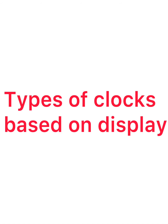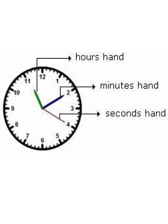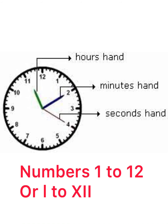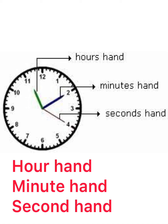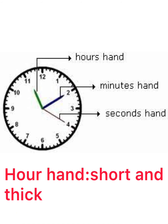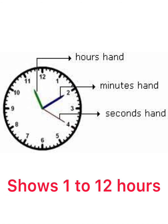Today let's know about the different types of clocks. First, let's know the types of clocks based on display. There are two types of clocks based on display: analog clocks and digital clocks. First, let's learn about the analog clock. This is the analog clock. The analog clock is called a classic clock because it has minutes, hours, and second hands, and also marks the hours from 1 to 12. The hours hand is very short and thick. It shows the hours 1 to 12.